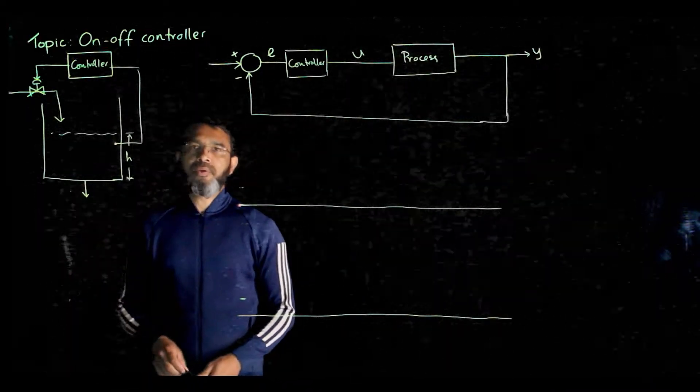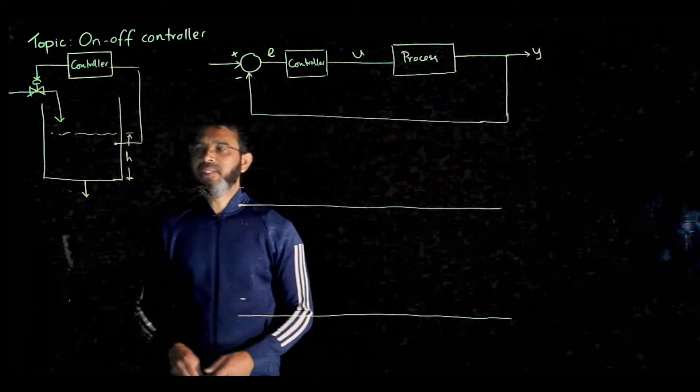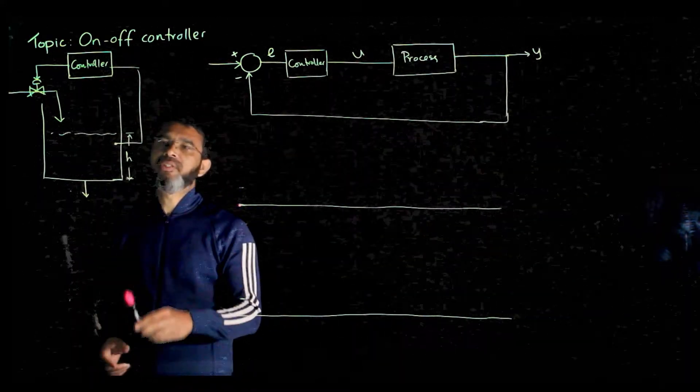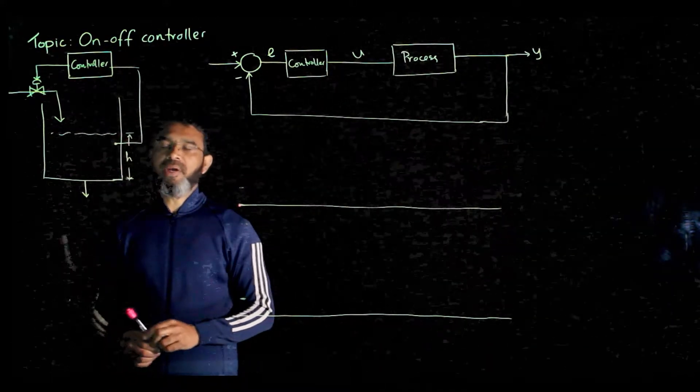In this session we talk about on-off control. Regarding on-off control, take the example of a simple tank process where you are trying to maintain the level of liquid in the tank.